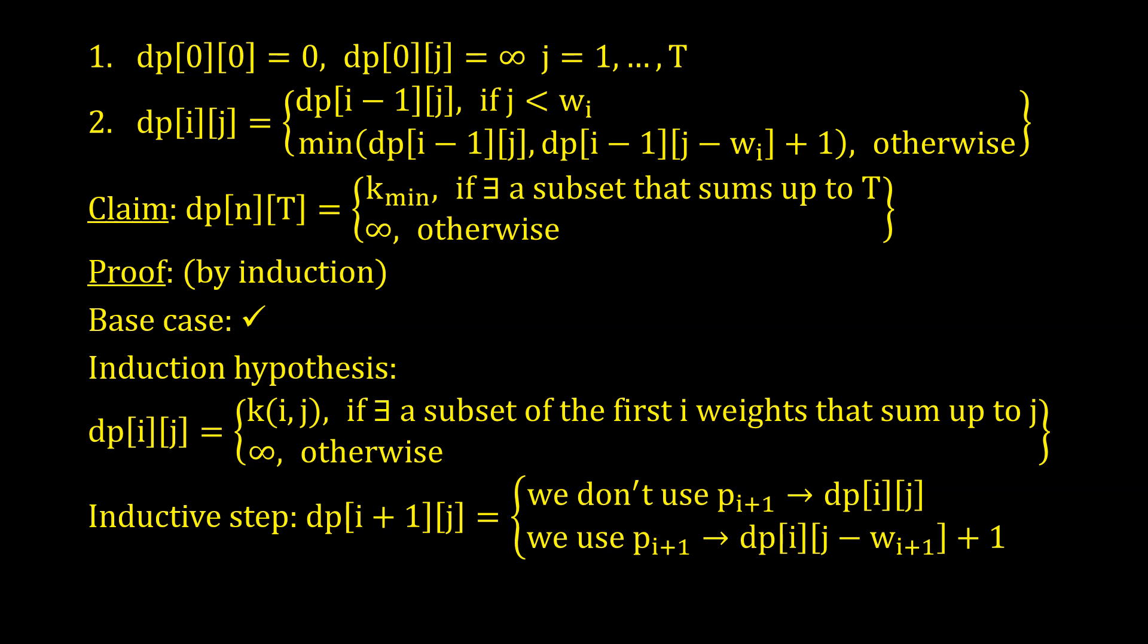We will prove by induction. Our initialization was correct, because the target weight of 0 can be achieved by the empty set, which has 0 elements. Positive target weights cannot be achieved using a subset of the first 0 elements.